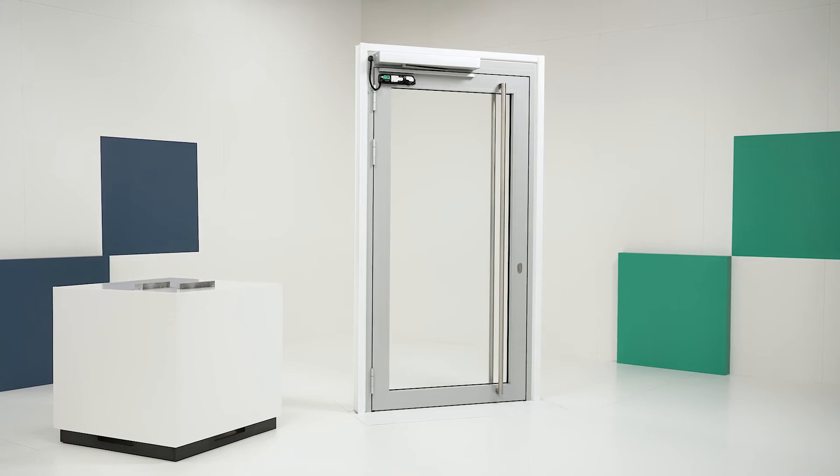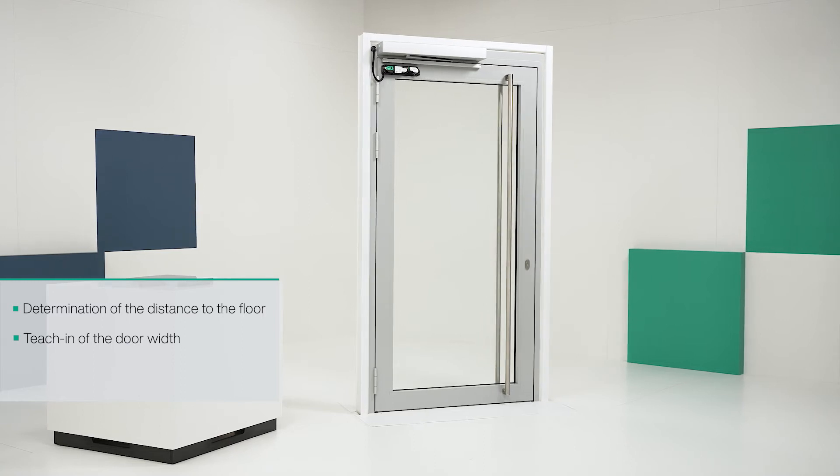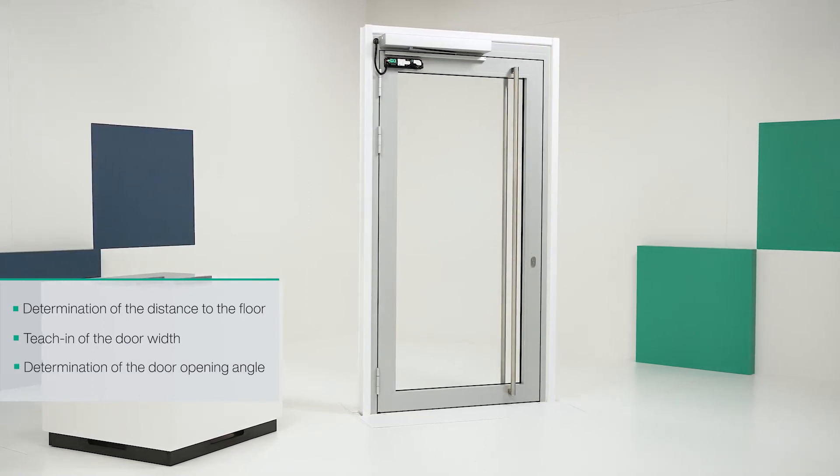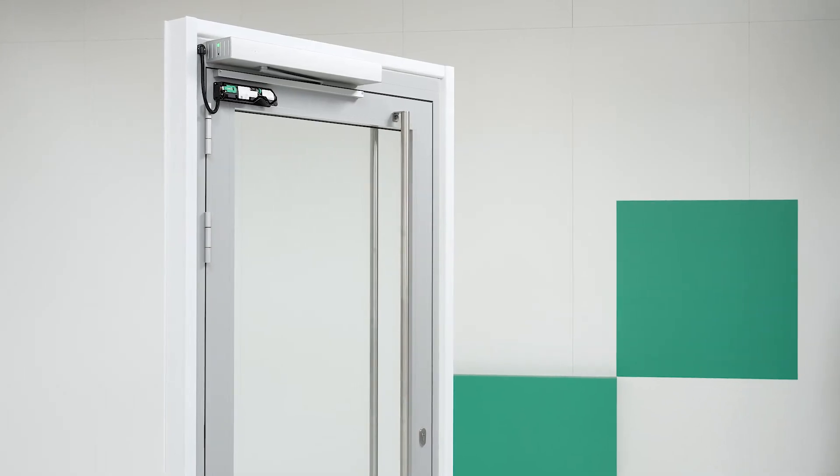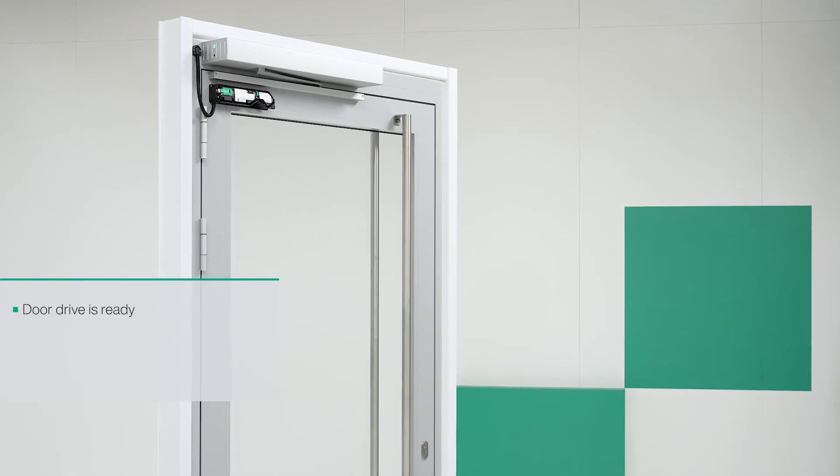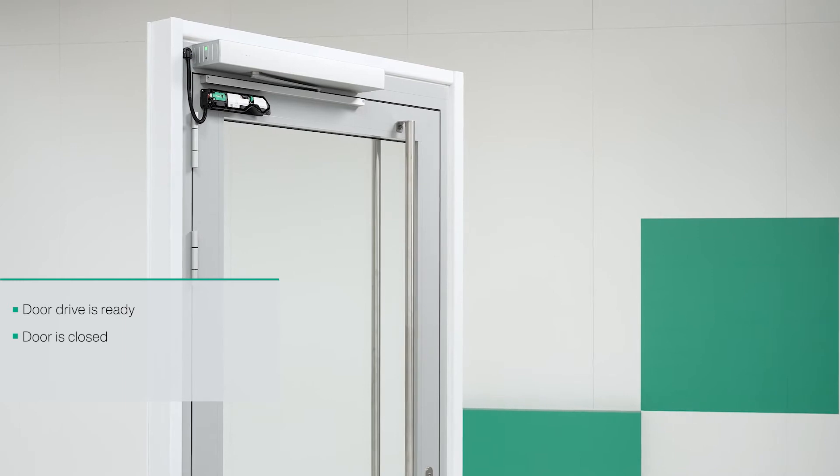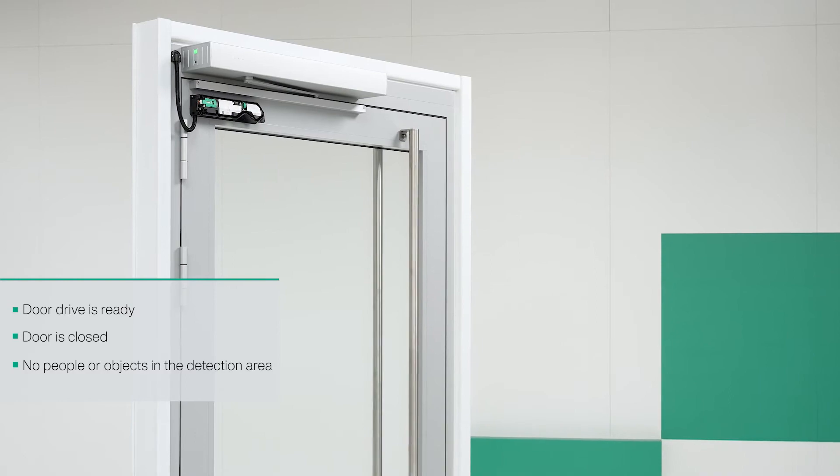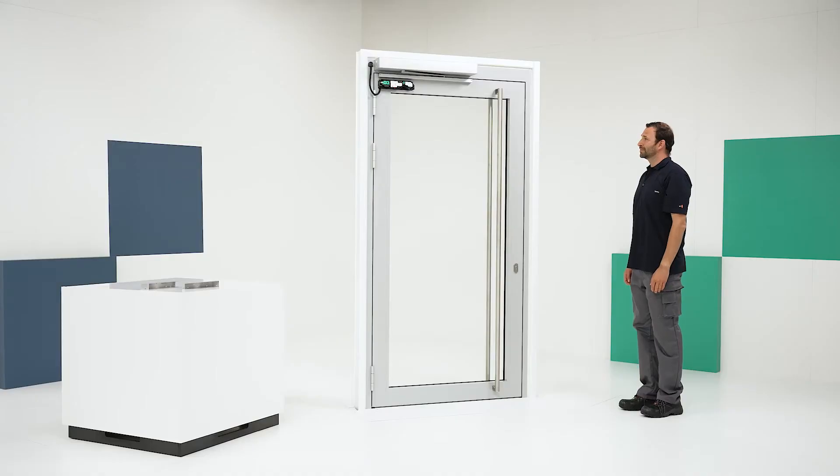The first thing the device learns during the teach-in procedure is the distance to the ground. It then learns the distance to the leading edge, that is the width of the door, and then it uses the final door movement to learn the door opening angle. Before starting the teach-in procedure for the device, be sure that the door drive is ready for operation, the door is closed, and that there are no people or objects within the detection area. Once you have checked the above, press the teach-in button to start the teach-in procedure.